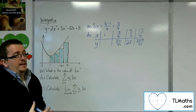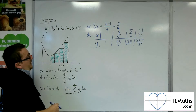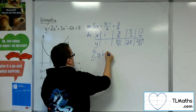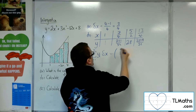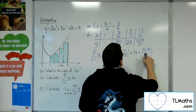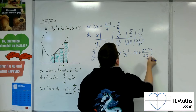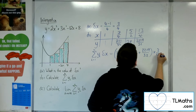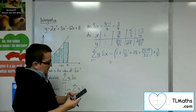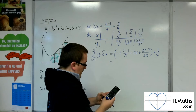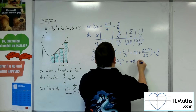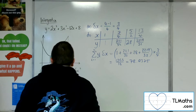Now that I've got those y values, I can find the sum of the y values times delta x. The sum from i equals 1 up to 4 of yi times delta x will be equal to the sum of the y's — 1 plus 221 over 32 plus 28 plus 2,219 over 32 — times by the width of the strip, 3 quarters. So I get 1,263 over 16, which equals 78.9375. That's the answer to part b.